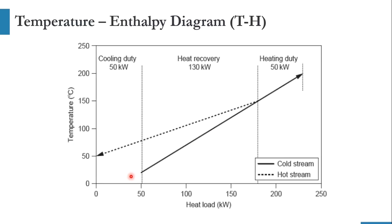This is the temperature-enthalpy (T-H) diagram — the graphical method for finding heating and cooling utility requirements. The heat load is on the x-axis and temperature on the y-axis. The dotted line represents the hot stream and the solid line represents the cold stream, going from 20°C to 200°C. The hot stream line goes from 150°C to 50°C. These two streams interact at a point known as the pinch point, or minimum temperature approach point.